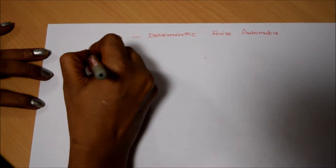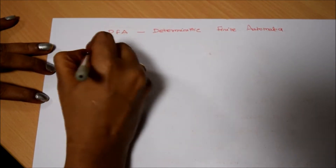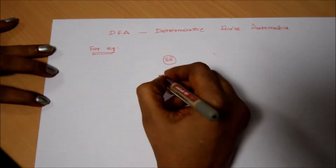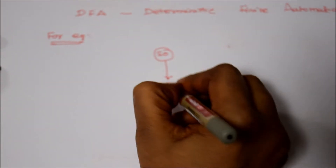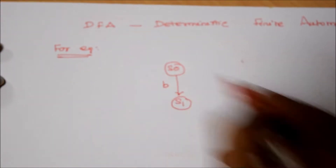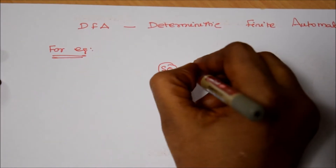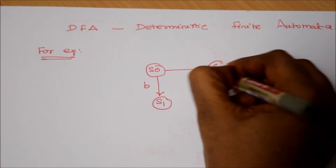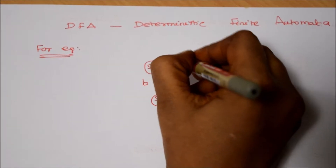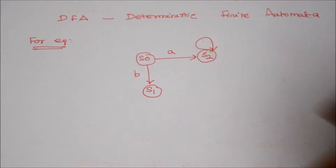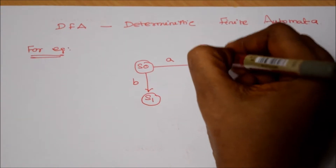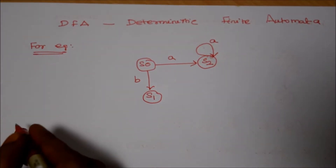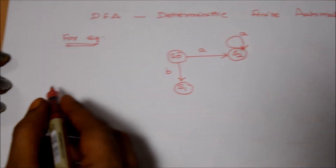For example, S0 is the initial state. It is going to S1 with the string value B. And S0 is going to another state S2 with string value A. One more path is going within the state with A. So in detail I am going to explain about the DFA.